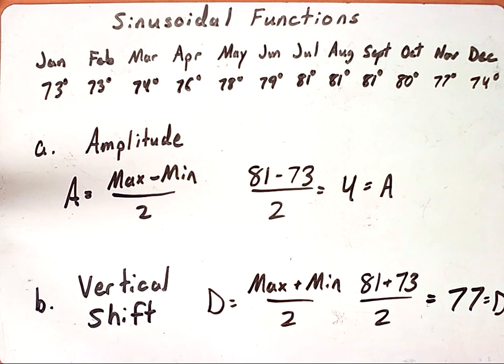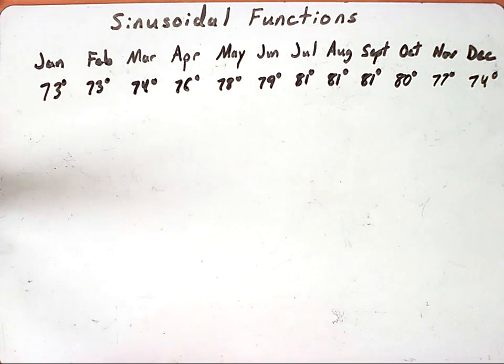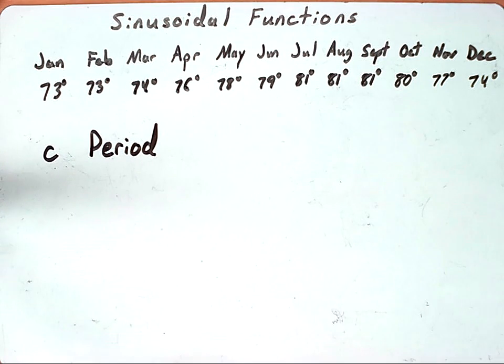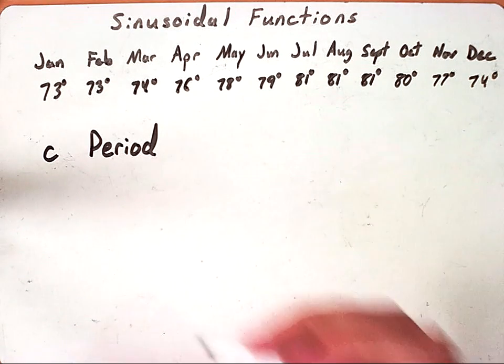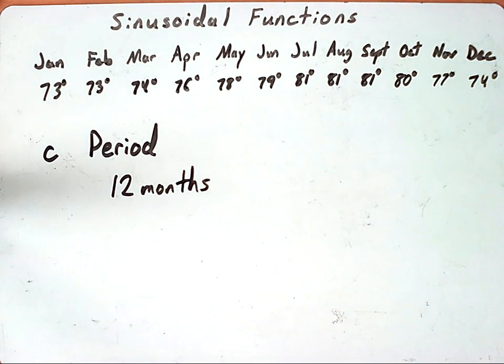Now we want to find the period of our function. So part C asks us what is the period. We look at the data we've been presented with - this is going January through December. Now this is just a typical year, so at the end of December of this year it would start over back at January and it would keep repeating until the end of time. So that means that we have a period of 12 months.